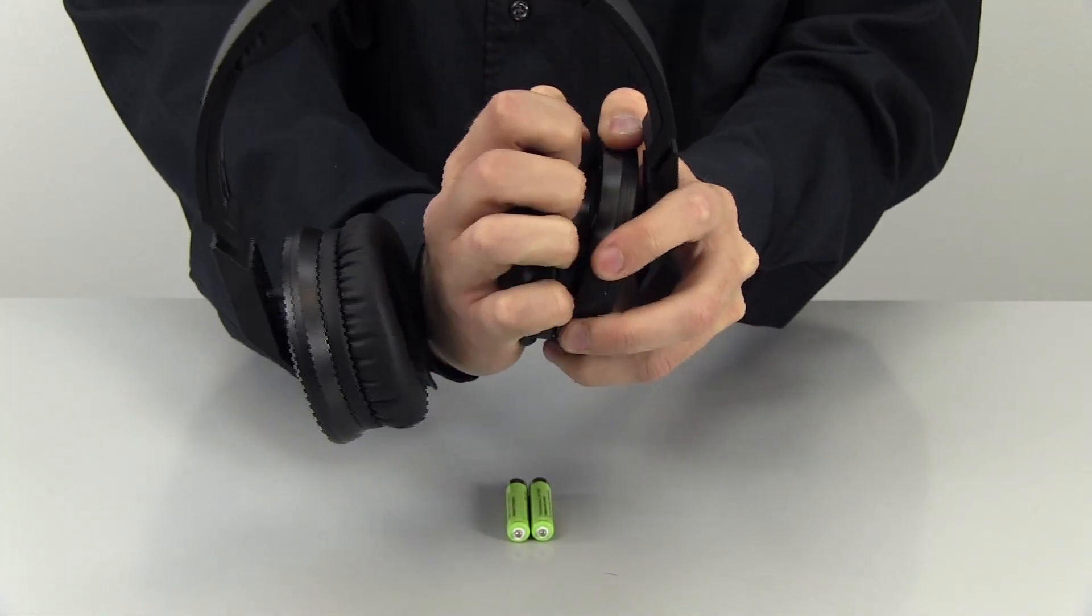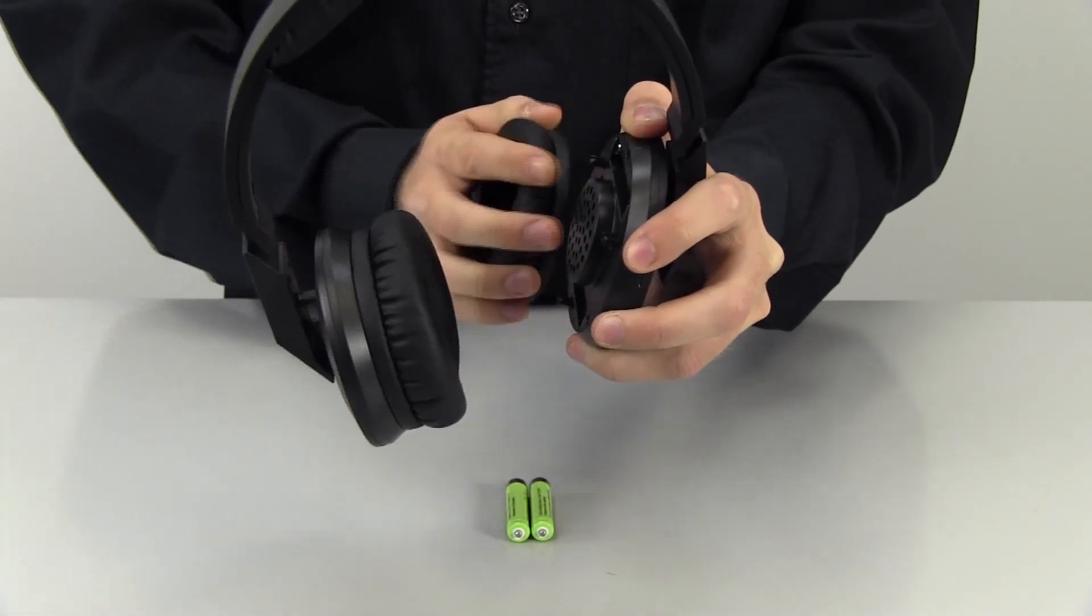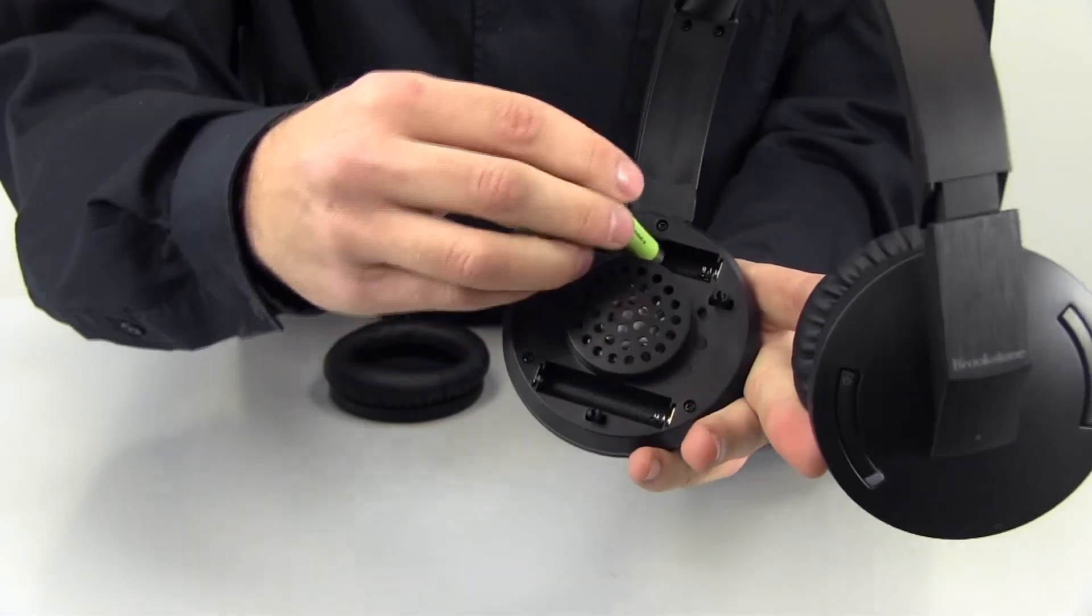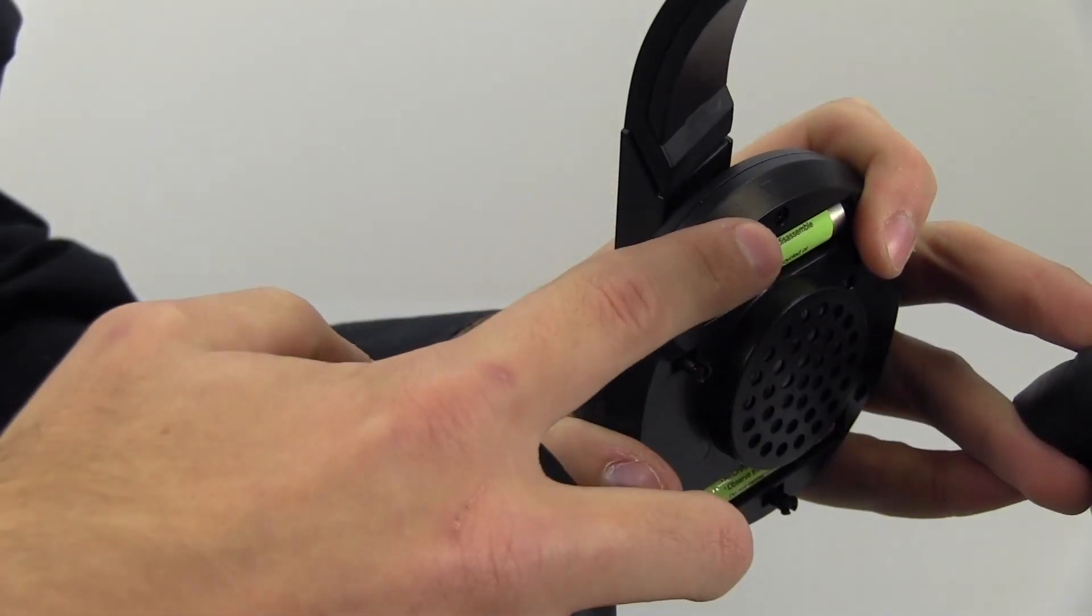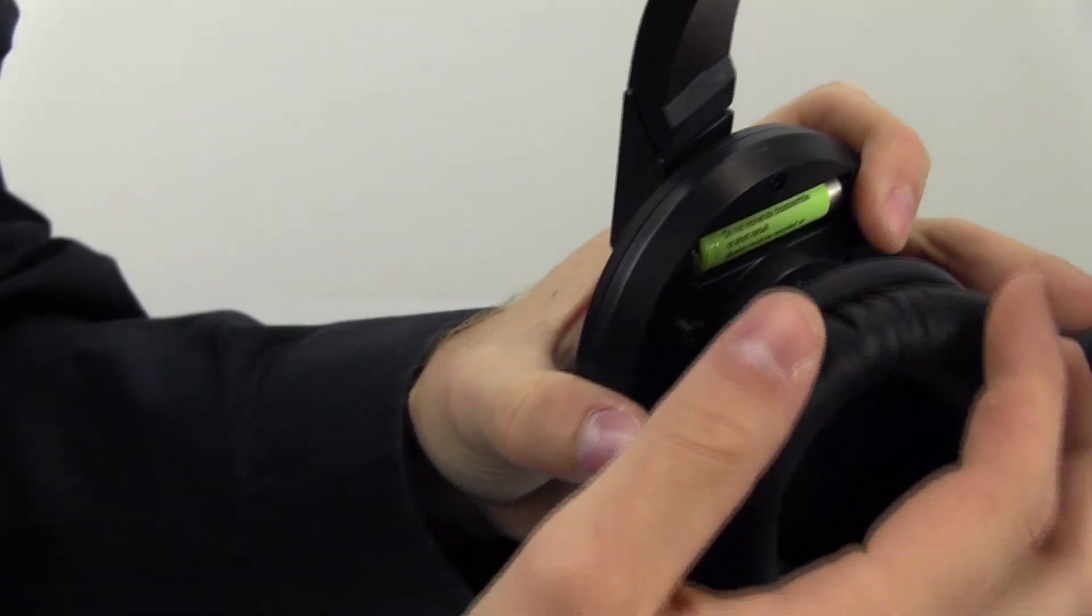First, start out by inserting the two AAA batteries into the headphones. Carefully remove the left earpad and insert the AAA batteries. Then place the left earpad back on the headphone by aligning the arrow on the earpad and the arrow on the headphone and pressing them together.